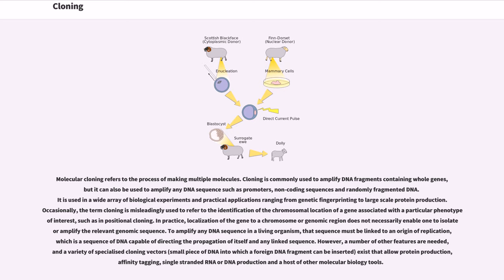In practice, localization of the gene to a chromosome or genomic region does not necessarily enable one to isolate or amplify the relevant genomic sequence. To amplify any DNA sequence in a living organism, that sequence must be linked to an origin of replication, which is a sequence of DNA capable of directing the propagation of itself and any linked sequence. However, a number of other features are needed, and a variety of specialized cloning vectors — small pieces of DNA into which a foreign DNA fragment can be inserted — exist that allow protein production, affinity tagging, and single-stranded RNA or DNA.